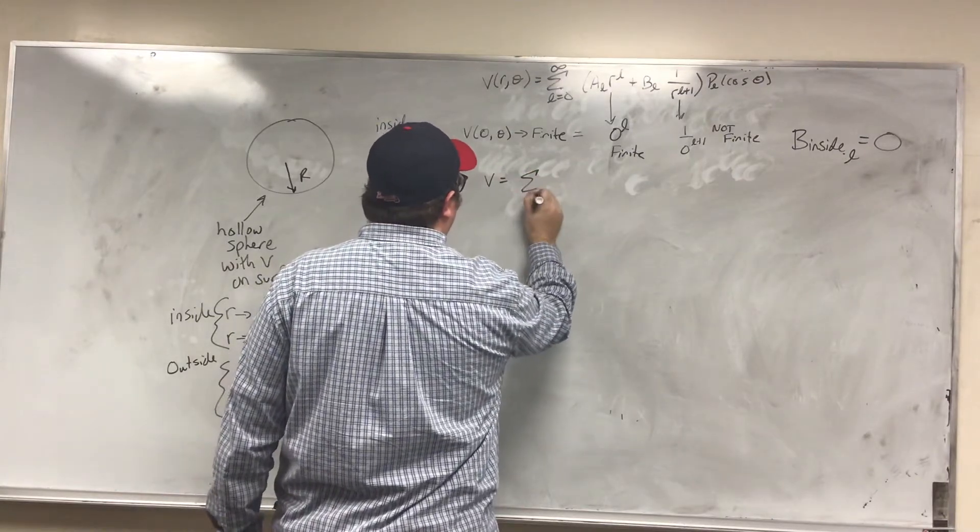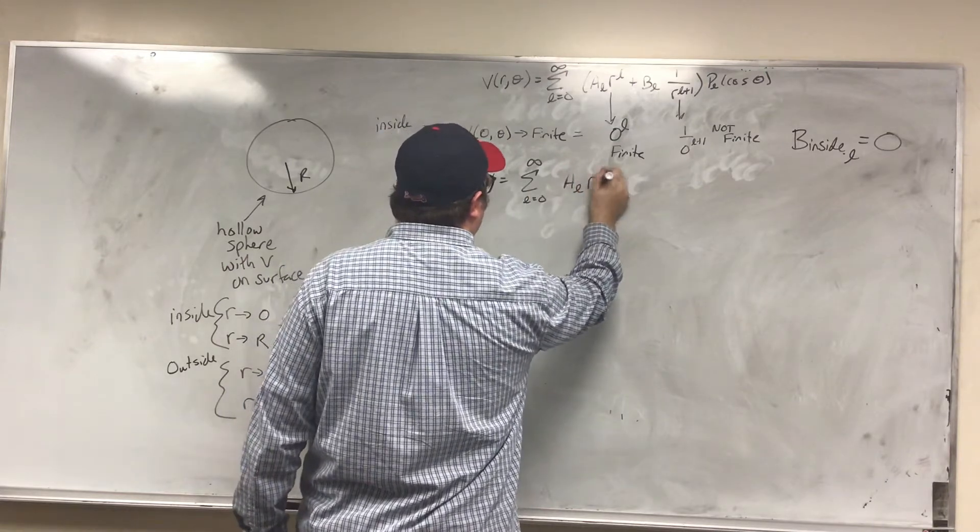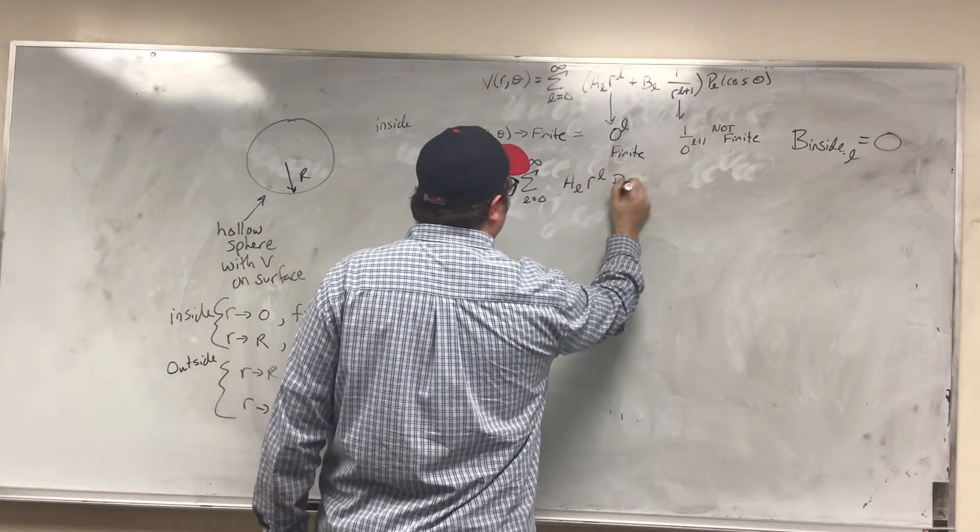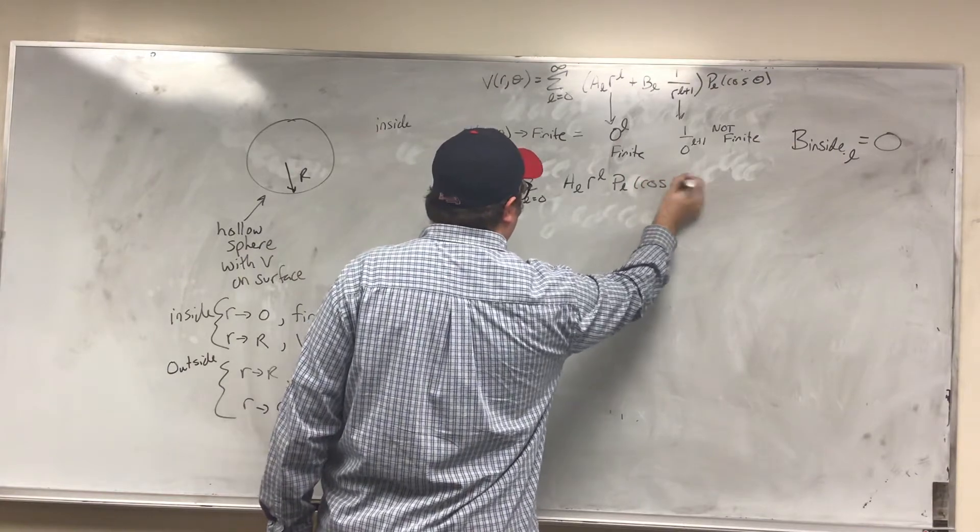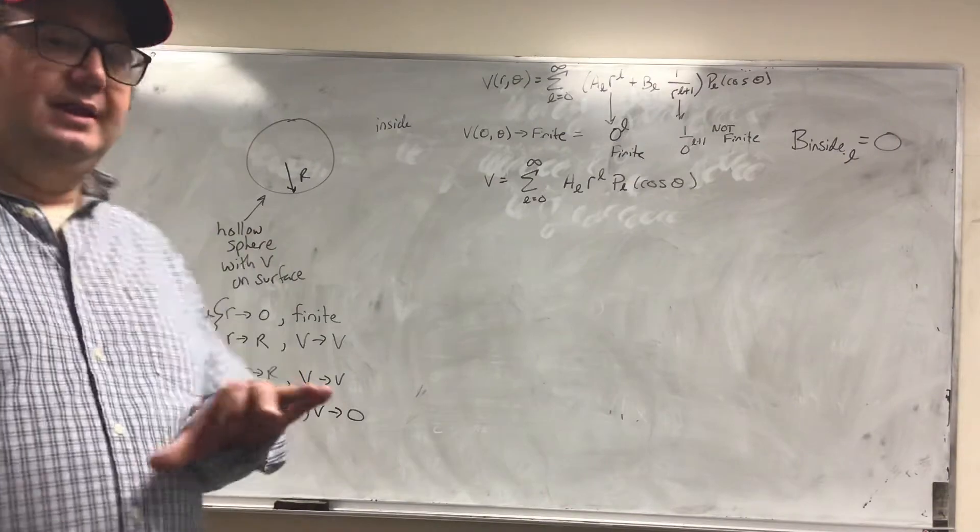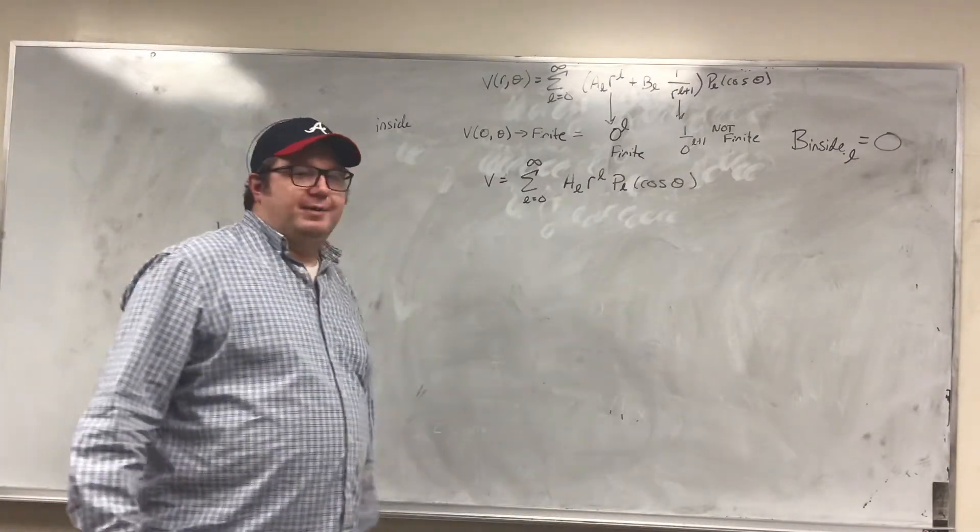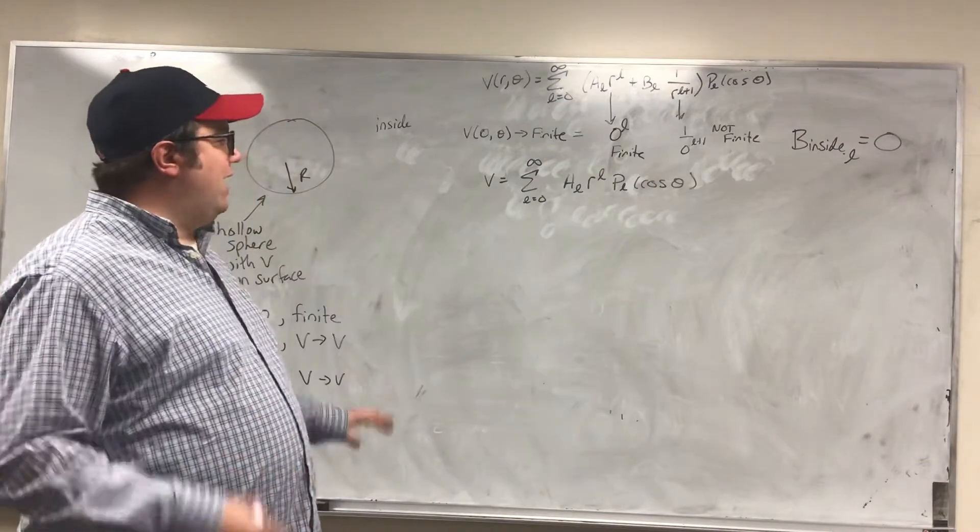So that tells me that my inside equation is actually quite a bit easier. It's going to be L equals zero to infinity, A_L, R^L, P_L, cosine theta.